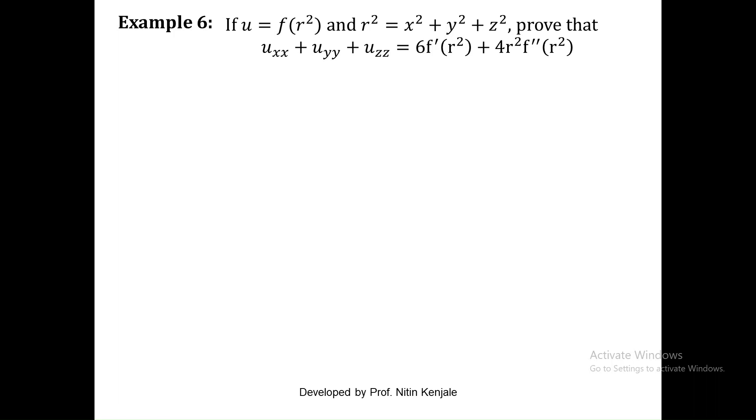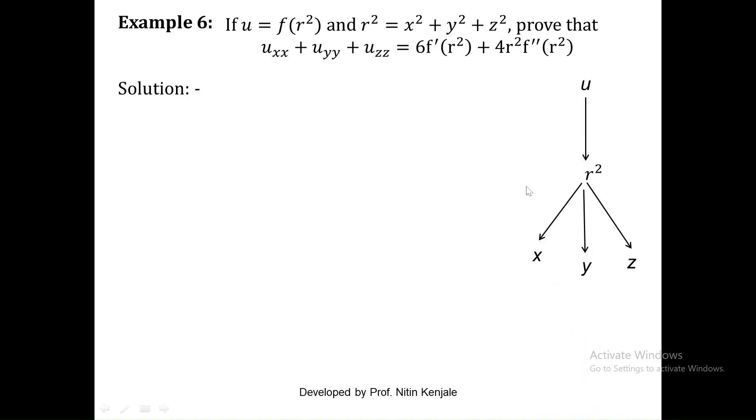In this next example we are given that u is a function of r square. There is a slight difference from the previous example: previously u was defined as a function of r, whereas here u is defined as a function of r square, where r square is x square plus y square plus z square. We are asked to prove that the sum of second order derivatives of u with respect to x, y, and z equals 6 into f dash of r square plus 4r square into f double dash of r square. Let us first draw the hierarchy diagram: u is a function of r square, and r is a function of x, y, z.